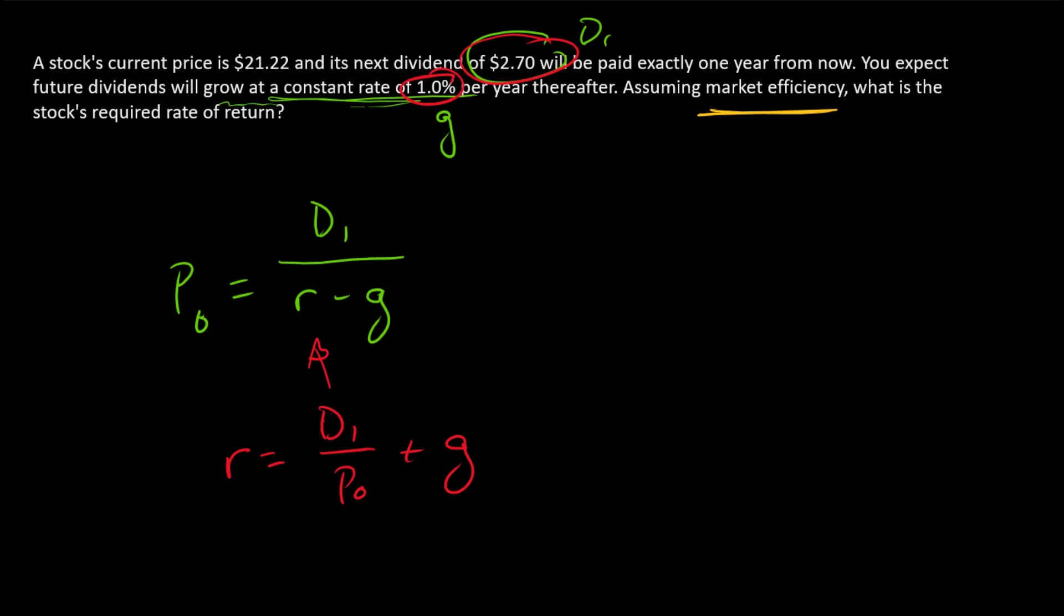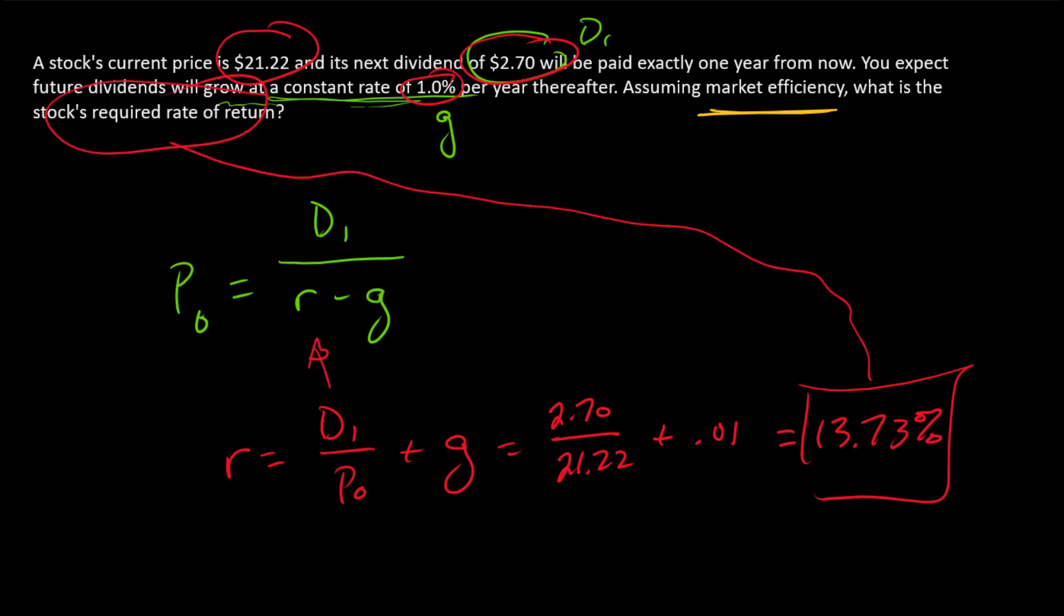There's our dividend, there's our growth rate, and there is our market determined price. So this becomes the following: we've got $2.70 in the numerator, divide that by the price, add the growth rate, and we get 13.73%. There's the answer - that is our estimate for the stock's required rate of return.